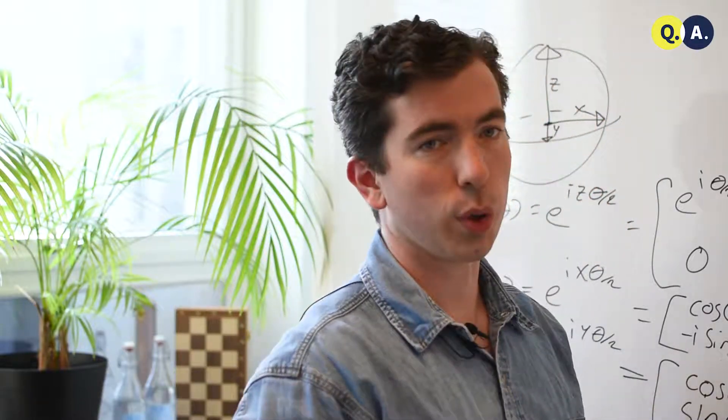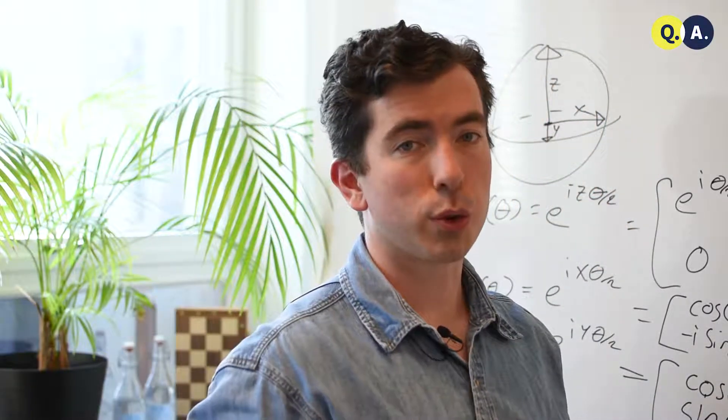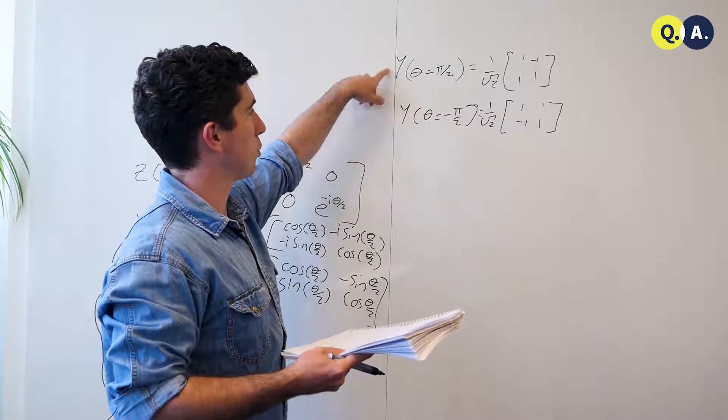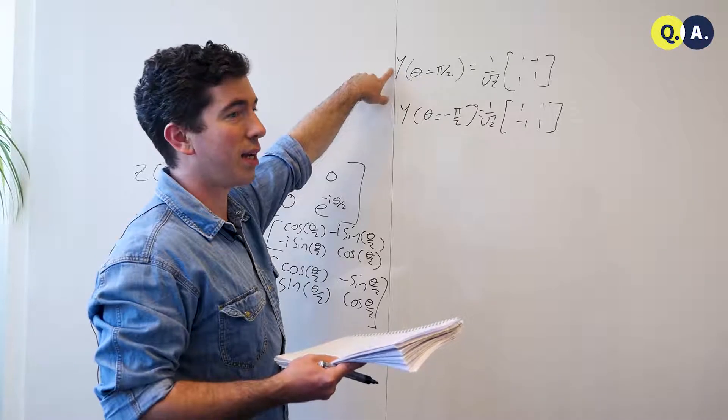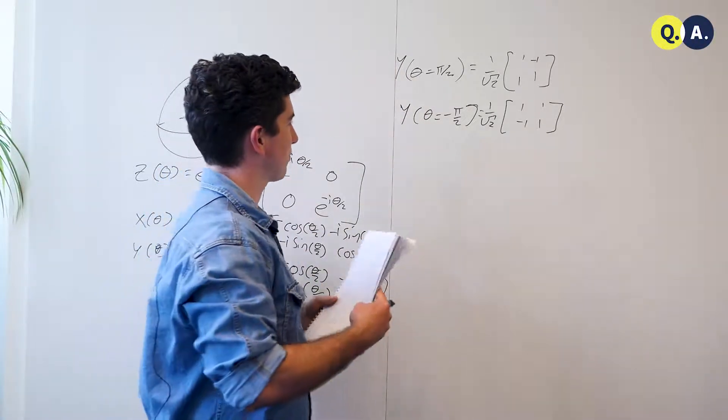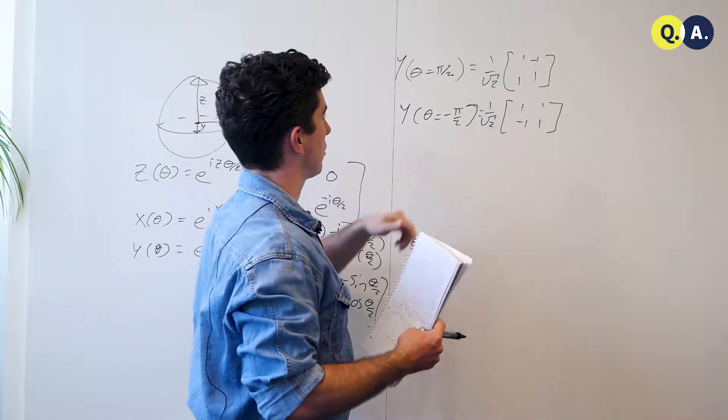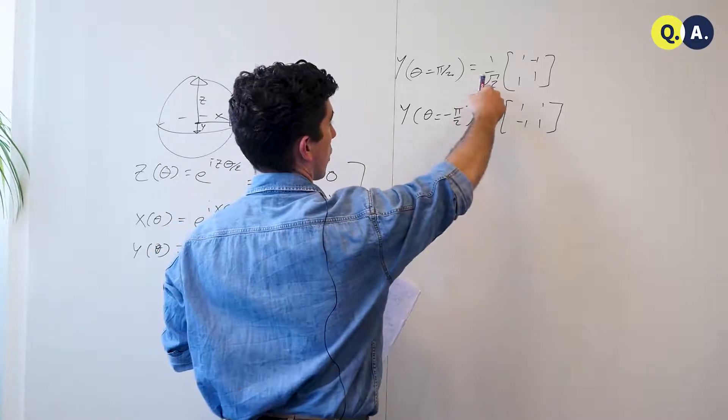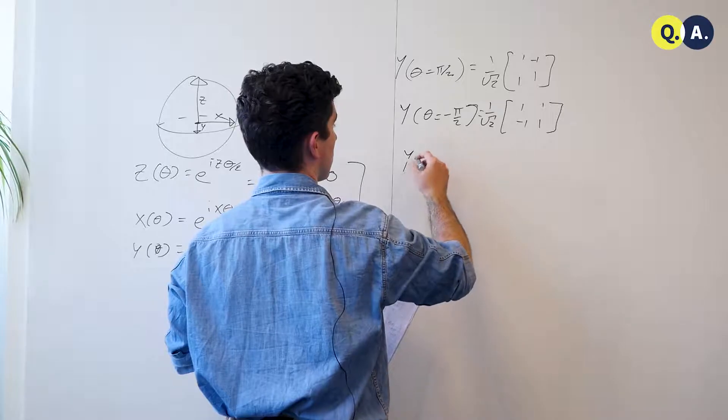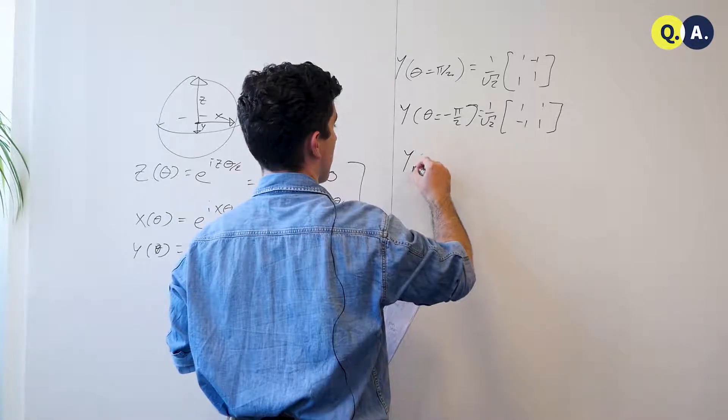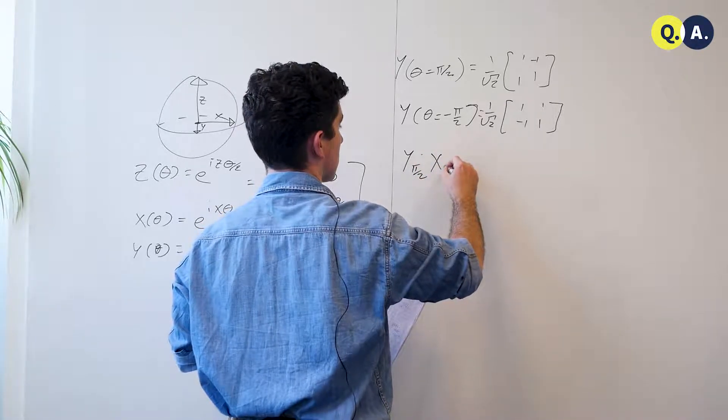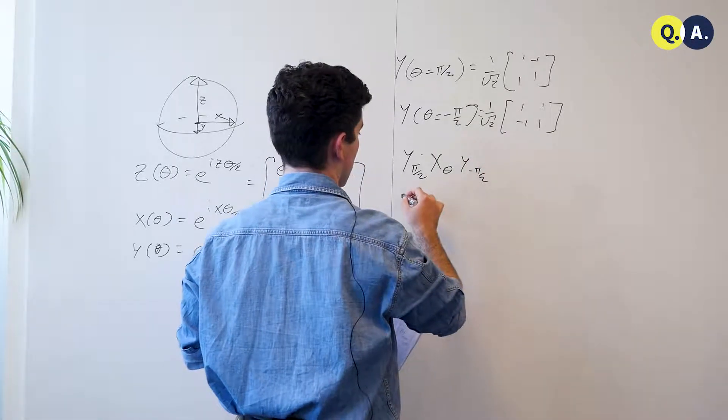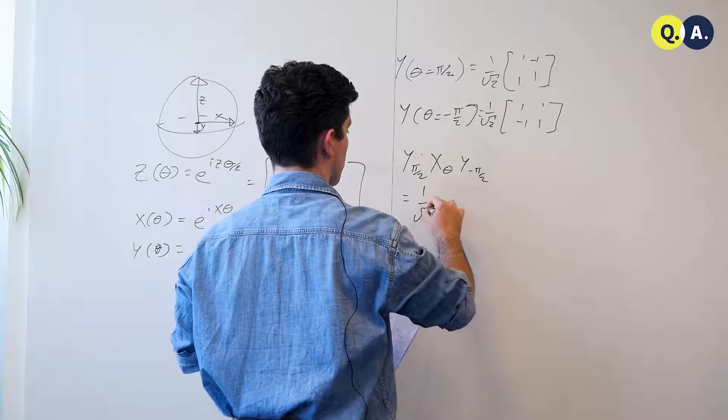Now let's take a look at what happens if we sandwich an x rotation about some angle theta with these two matrices, which we lovingly call y 90 and y minus 90, because they're 90 degree rotations. So, we're going to get y pi by 2, x theta, y minus pi by 2 is equal to 1 over root 2.